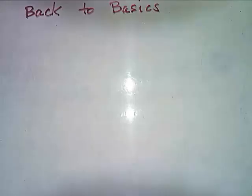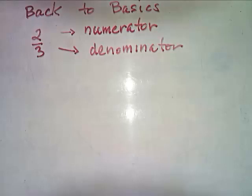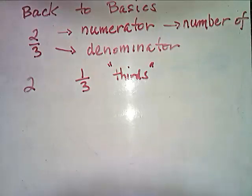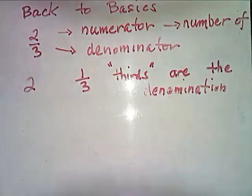Let's get back to basics. A fraction 2 over 3 has a numerator and a denominator. The numerator counts the number of things, and the things we're talking about are thirds. So in this case, the 2 means we want 2 thirds.